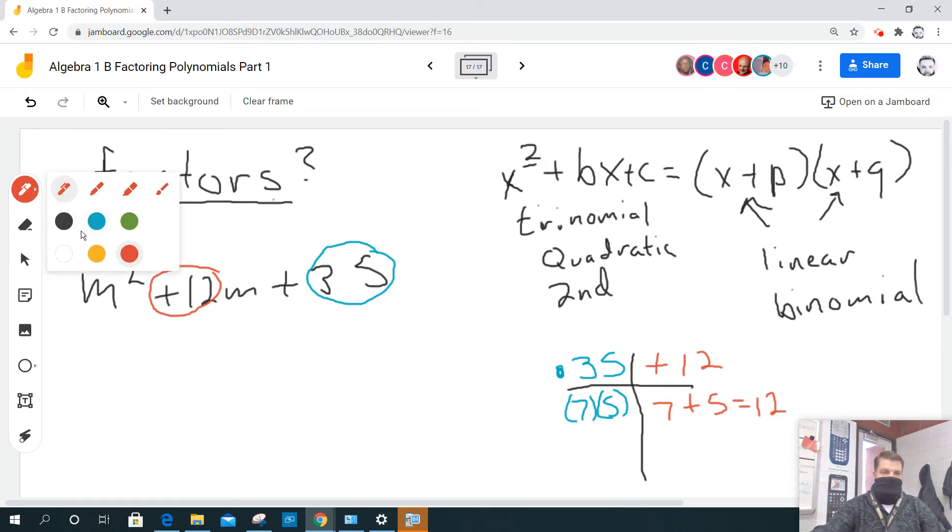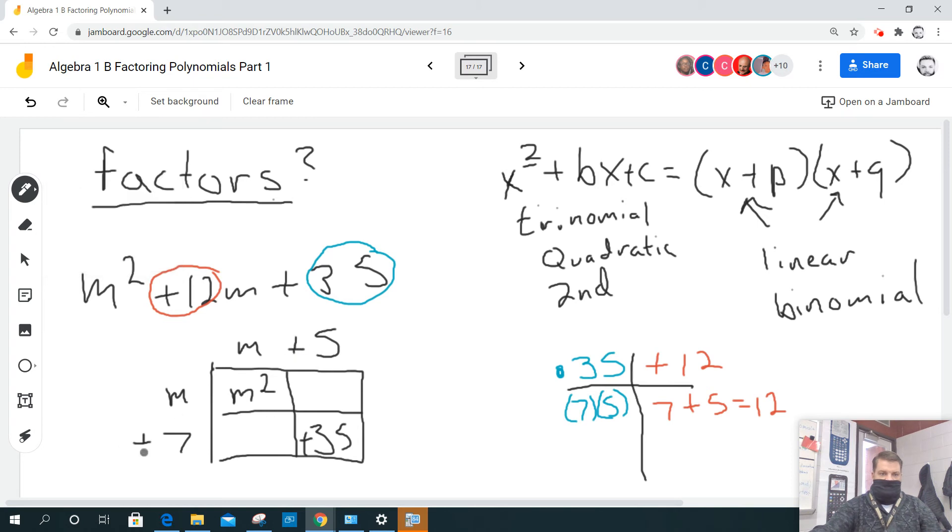Now why did I do that? Well, because that's going to help me with my guess and check. This problem is kind of rigged. There's only 35 times 1 and then 5 times 7. But anyways, I'm going to take my first term for my guess and check, which is m squared, and then my last term. Now, m times m equals m squared, and then I'm guessing that 5 times 7 equals 35. And because I did all this work, I know that this is a positive, and this is a positive.